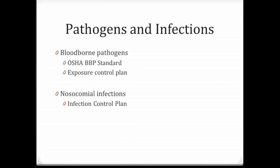Pathogens and infections. A bloodborne pathogen is any infectious microorganism present in the blood and other bodily fluids containing blood. Examples would be hepatitis A, B, C, D, or E; HIV; syphilis; and malaria — and there are many, many more. Those are just some examples.